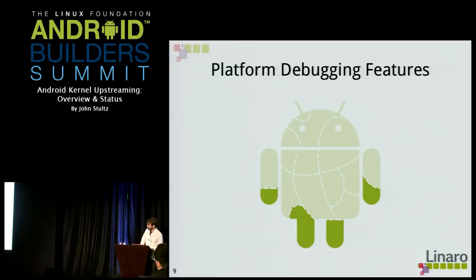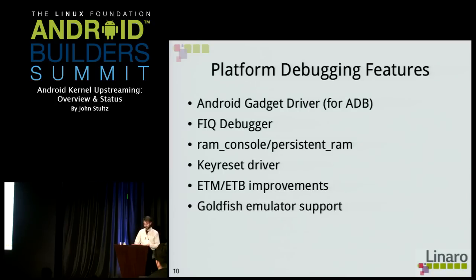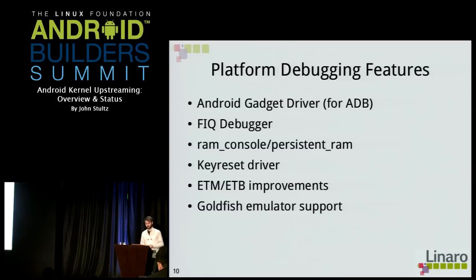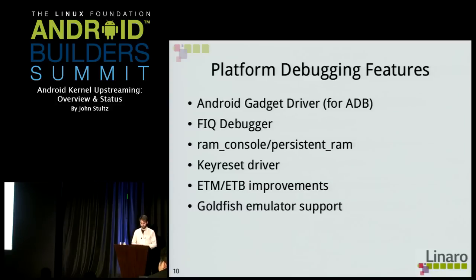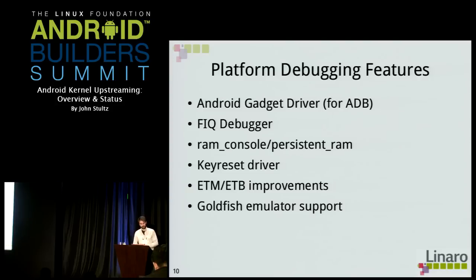Platform debugging features: there's the Android gadget driver, which allows the device to multiplex a number of different interfaces over a single USB connection. It can be configured dynamically at runtime for things like ADB, file transfer protocols like MTP or PTP, and tethering protocols like ACM. We have the FIQ debugger, a low-level kernel debugger using ARM's fast interrupt mode. Interestingly, if you have the right cable, you can plug into the headphone jack on some devices and get a serial port giving access to the FIQ debugger — very useful for debugging a problematic device.